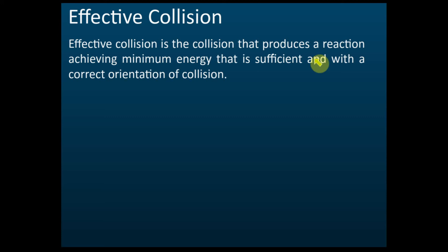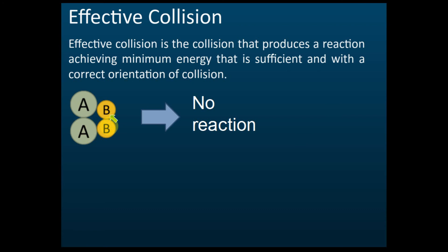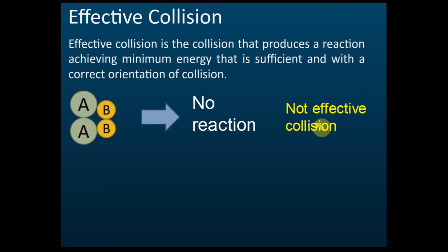The next concept is effective collisions. An effective collision is the collision that produces a reaction, achieving the minimum energy that is sufficient and with a correct orientation. For example, if a collision has the correct orientation but the activation energy is not enough, there is no reaction. This type of collision is called a not effective collision.